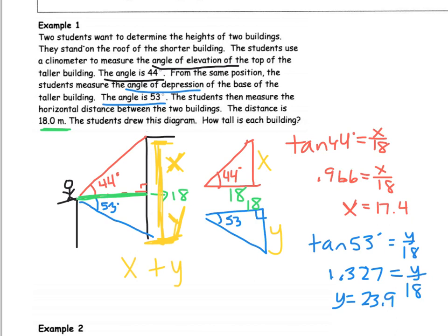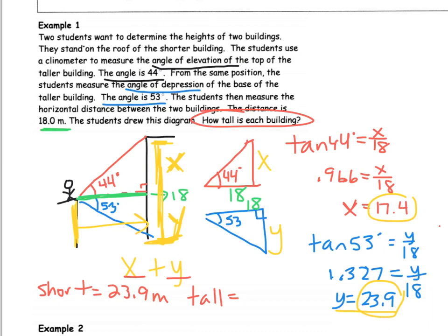So now we need to answer our question. How tall is each building? So my short building, notice your short building is going to be the same as y. So y was 23.9 and our unit is meters. And our tall building is x plus y. So I'm going to add 17.4 plus 23.9. And I get 41.3 meters.